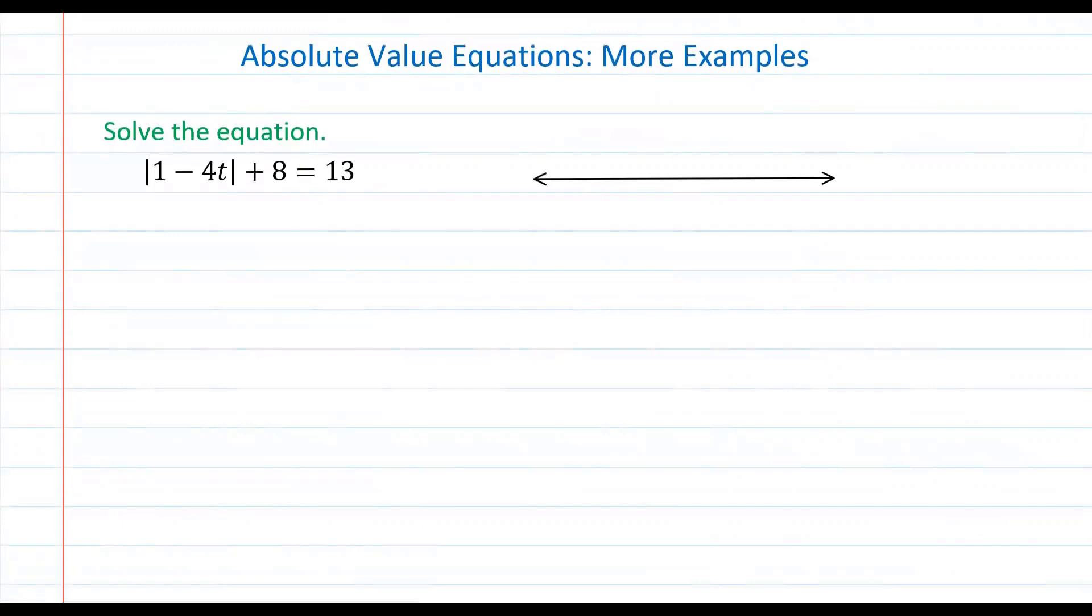Welcome back mathematicians. In this video we're going to look at absolute value equations. We're going to look at one more example of how to solve an absolute value equation. What we have is the absolute value of the quantity 1 minus 4t plus 8 is equal to 13.